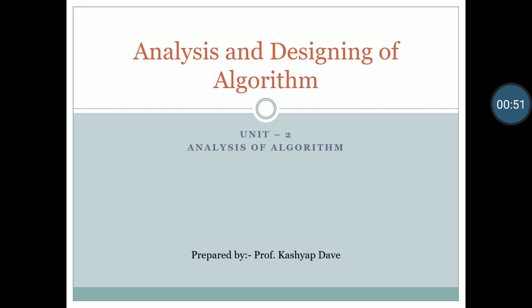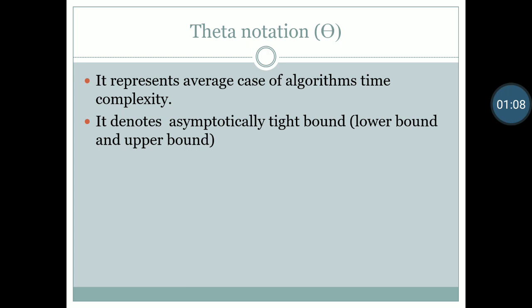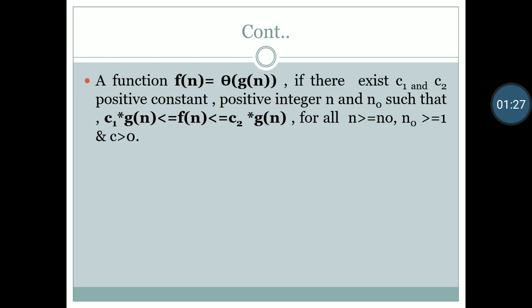Now in this lecture we will study about the third notation, which is Theta notation. Theta notation represents the average case of an algorithm's time complexity. It notes the asymptotically tight bound — that is, both the lower bound and the upper bound.